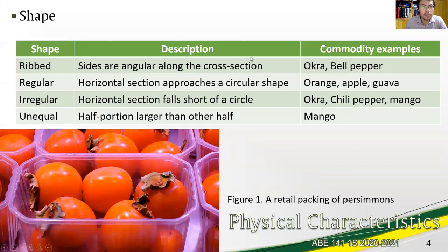We have also rib, sides are angular along the wall section with okra and bell pepper. Regular horizontal section approaching a circular shape we have orange apple and guava. Irregular horizontal section falls short of a circle, okra, chili pepper, mango most of them are irregular shape. Unequal half portion is larger than the other half for mango.